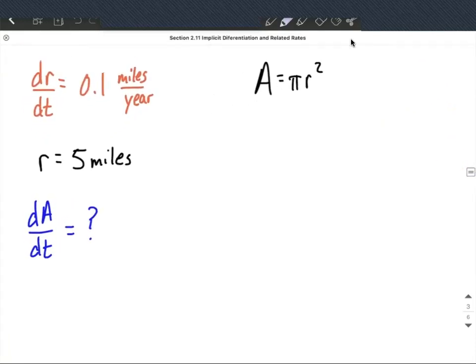So on the left-hand side, the derivative of A is going to be 1, but we need a dA/dt. On the right-hand side, I'm going to go ahead and bring the pi along. It's just a constant. And we'll take the derivative of r squared. Well, the two can come down in front, and we'll reduce that exponent by 1, using the power rule for derivatives.